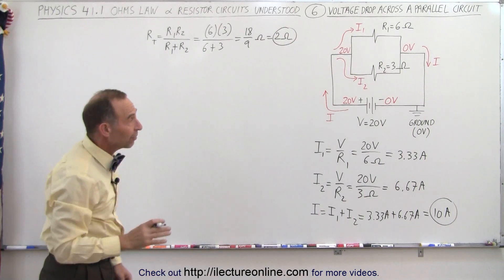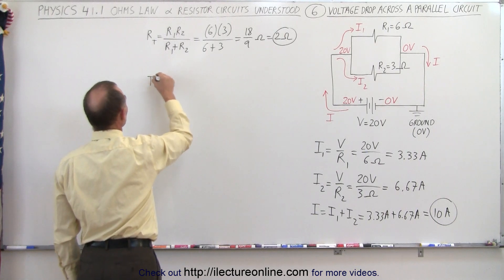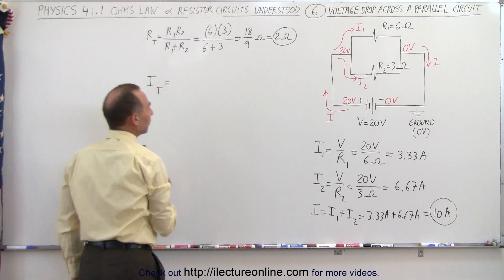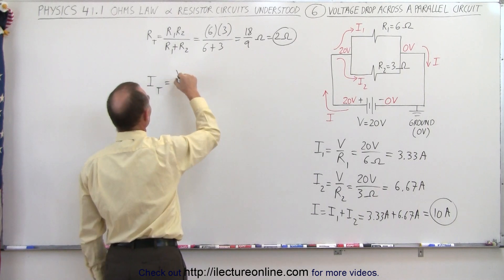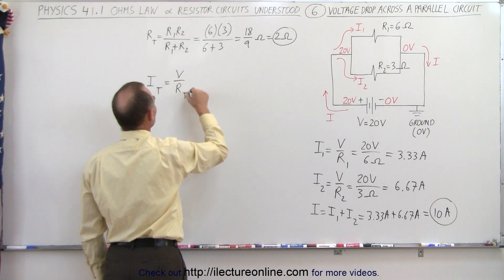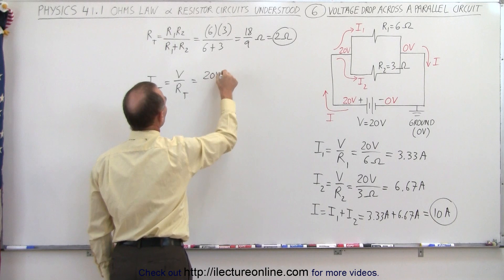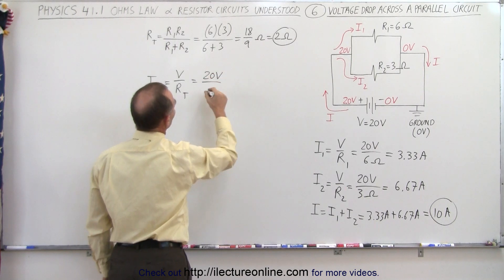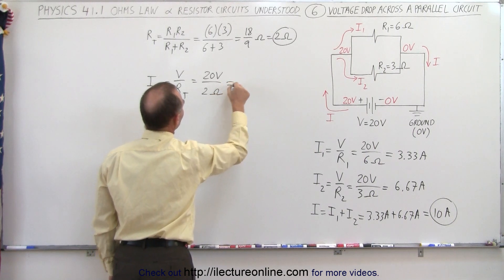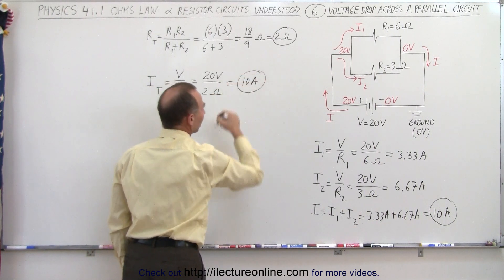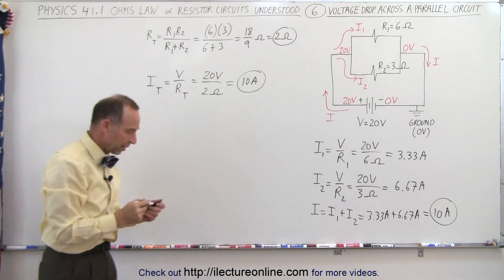Now we can use that to find the total current. We can say that I total is equal to V over R, so V divided by R total. In this case, that's 20 volts divided by R total, which is going to be 2 ohms right there. So notice that, yes, indeed, we have a total current of 10 amps, which is what we found right there.